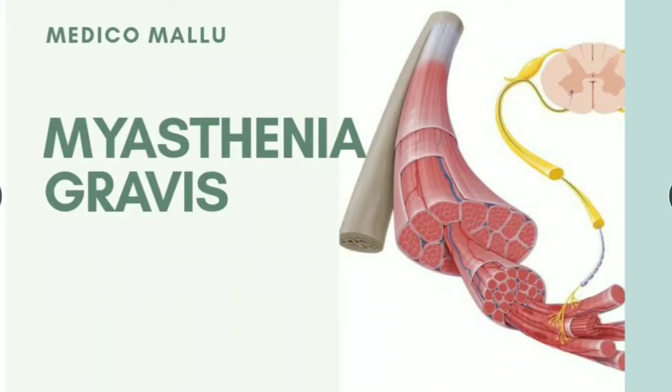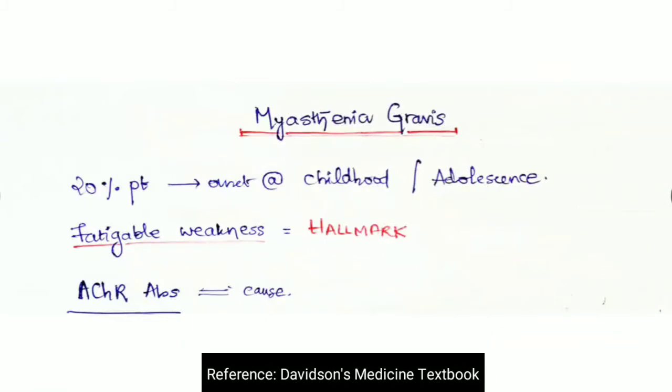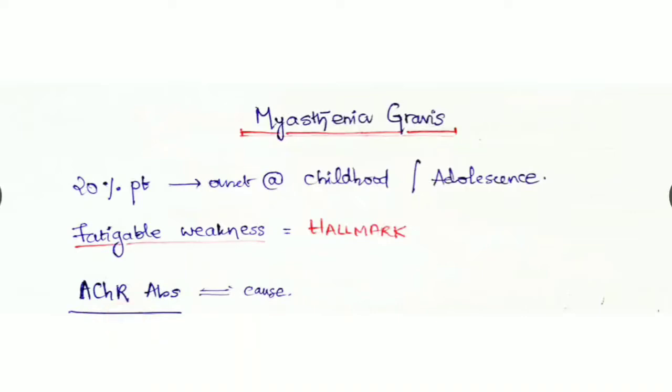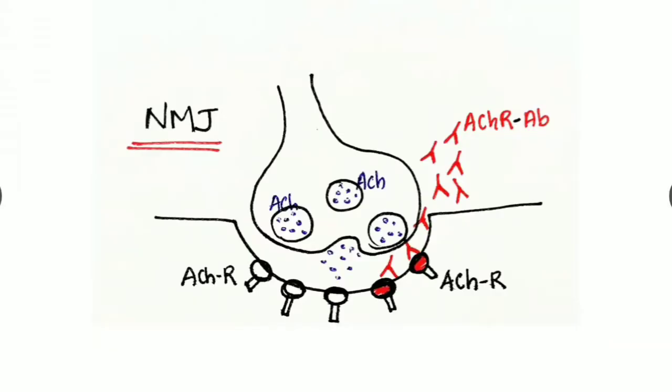Myasthenia gravis is an autoimmune condition where there is increased production of autoantibodies against acetylcholine receptors, and that is the chief cause. This affects the neuromuscular junction.